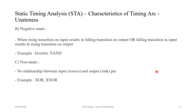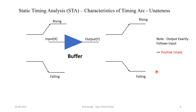The third type of unateness is non-unate, where there is no exact relationship that exists between input and output. Now let's take some examples of some cells and try to understand.